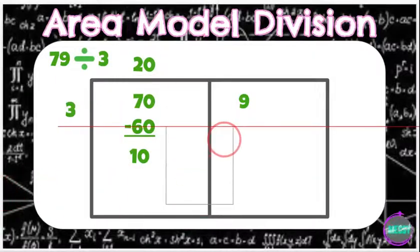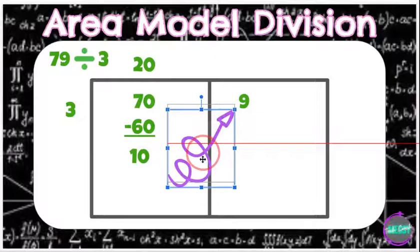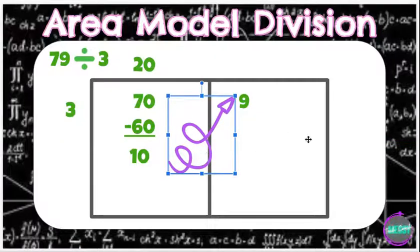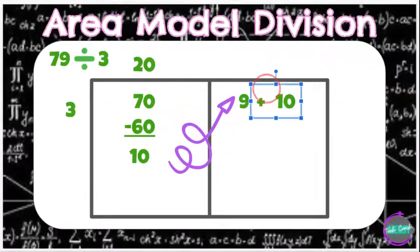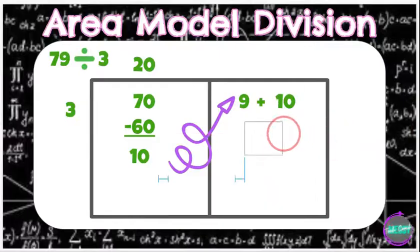Now I need to take that 10, and I'm going to add it to my 9. 10 plus 9 is 19.